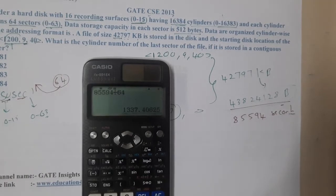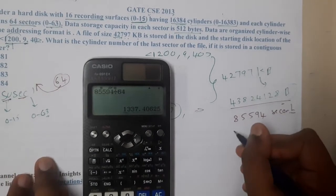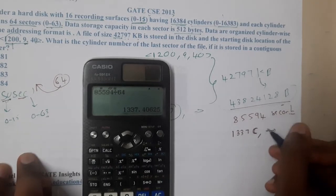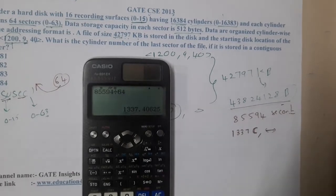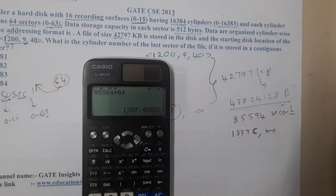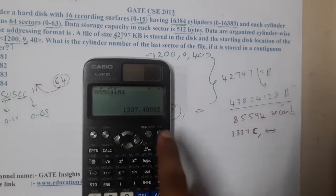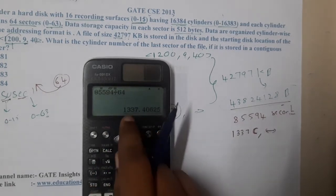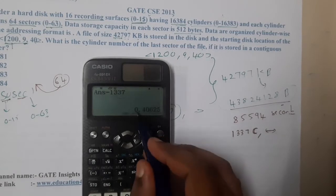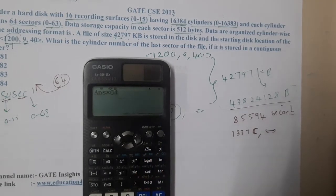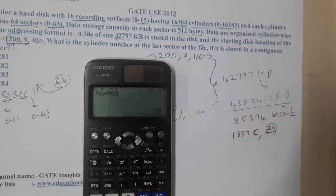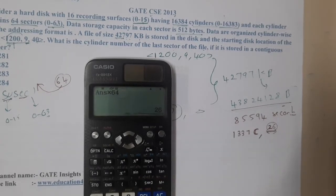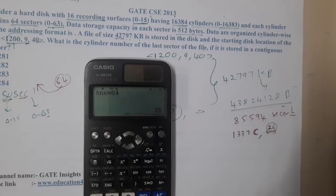From here it goes to a decimal result, but that's okay. We need 1,337 surfaces worth of data. For the remainder, multiply 64 by the integer part (1,337) and subtract from 85,594 to get the leftover sectors. The leftover is 26 sectors. So the file needs 1,337 full surfaces plus 26 extra sectors.